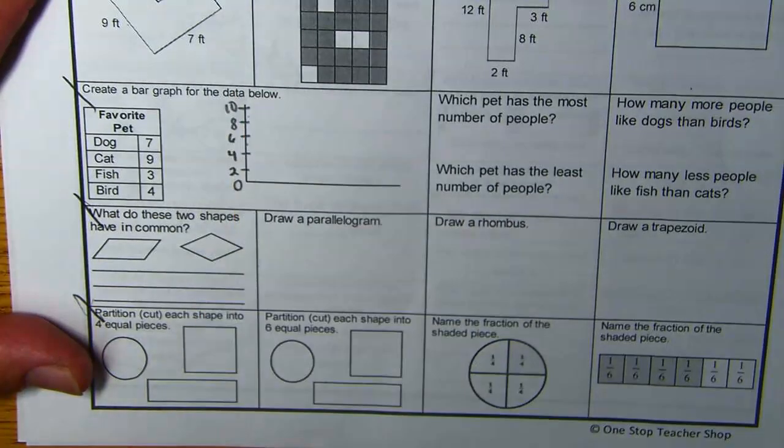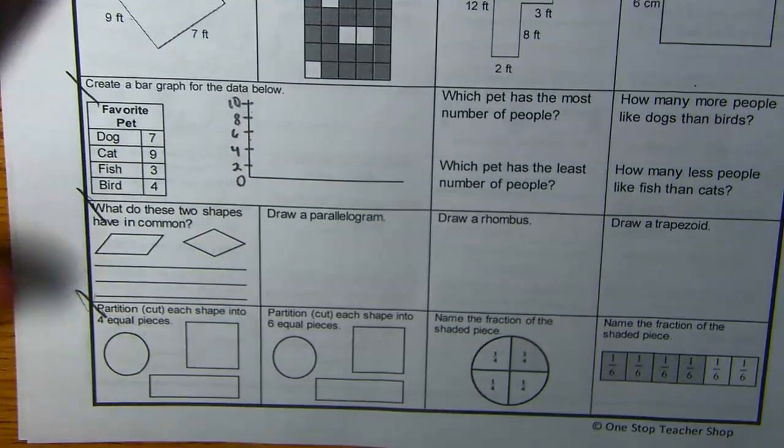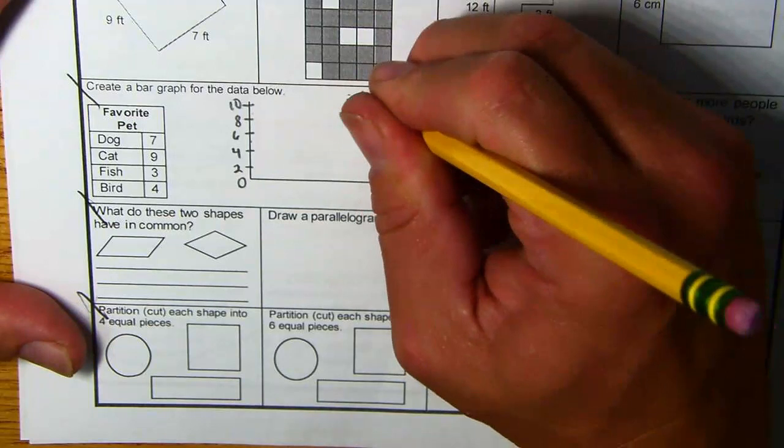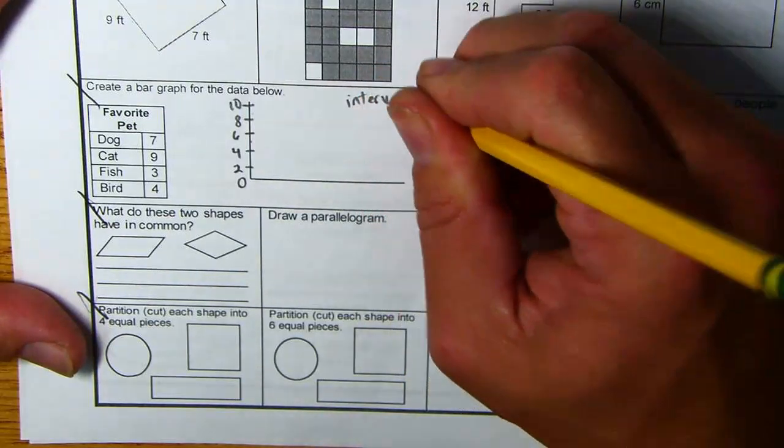You want the same amount of space in between each number, which looks pretty good. If you see here, see how the gaps are kind of the same. And we're skip counting by twos. That's called the interval. Our interval is two.